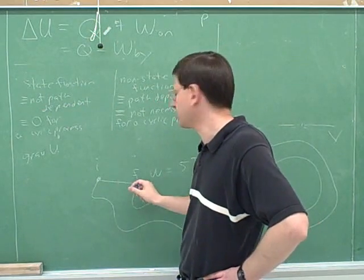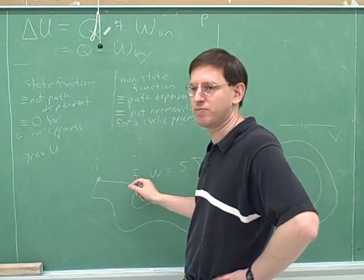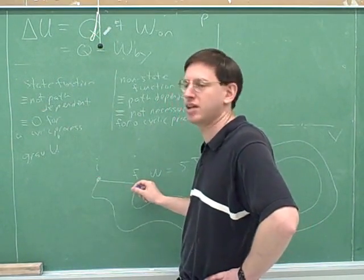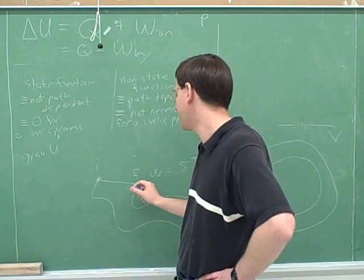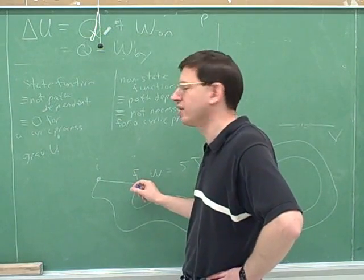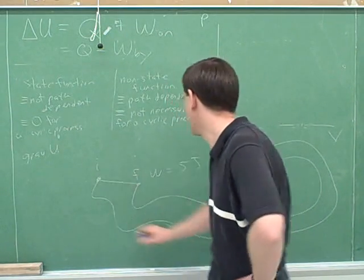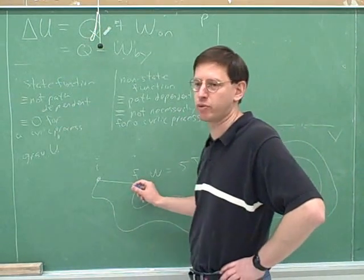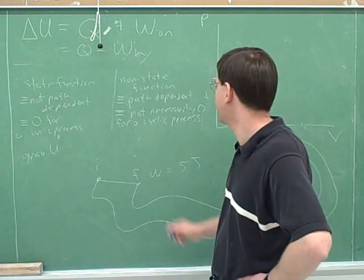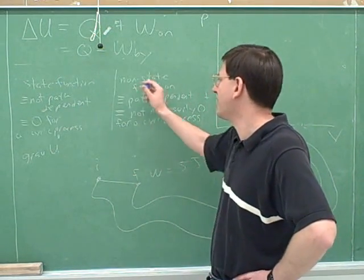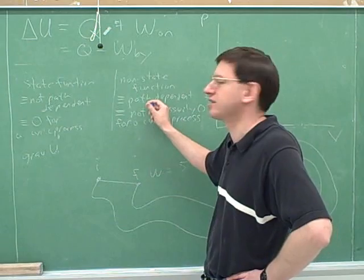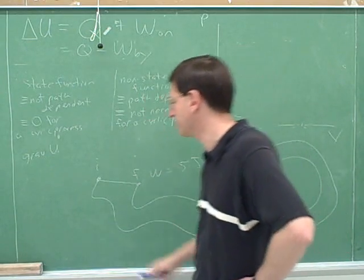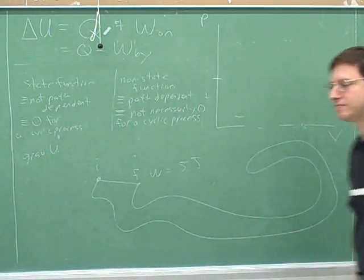Clearly, friction is not a state function, because the work done by friction is path dependent. We had the same initial and final points for both cases — the chalk started and ended at the same places — but the short path had a small amount of work done by friction, and the long path had much more. So the work done by friction is not a state function because it is path dependent.